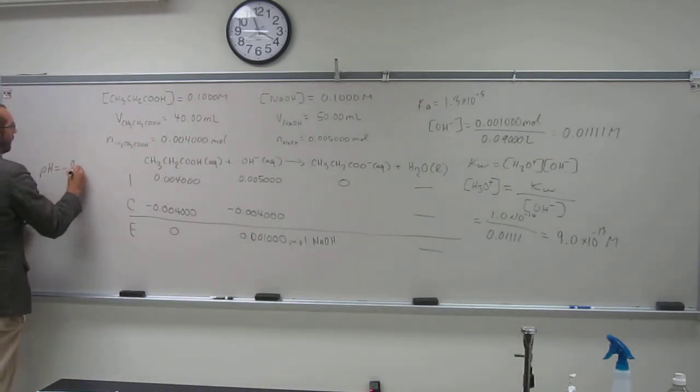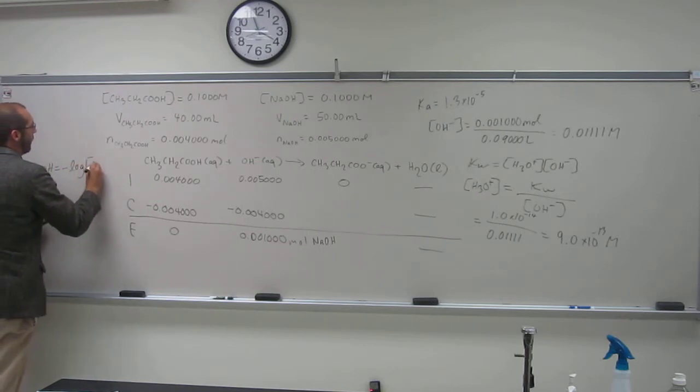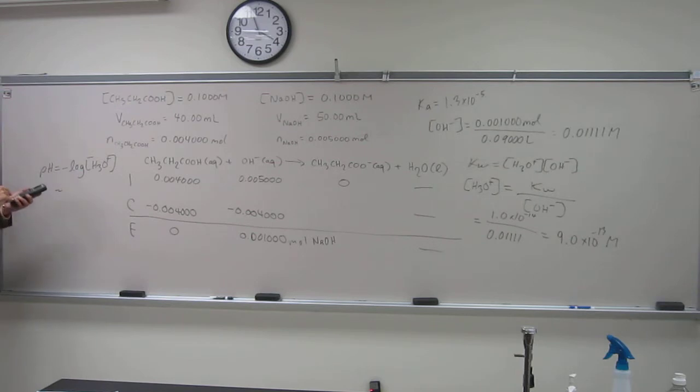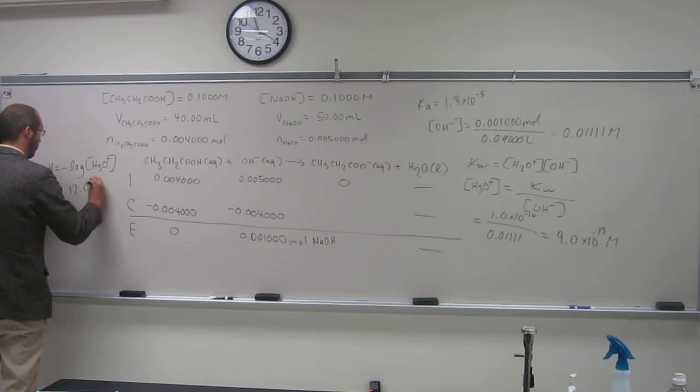pH is gonna be the negative log of the H3O plus concentration. So negative log of the H3O plus concentration equals 12.05.